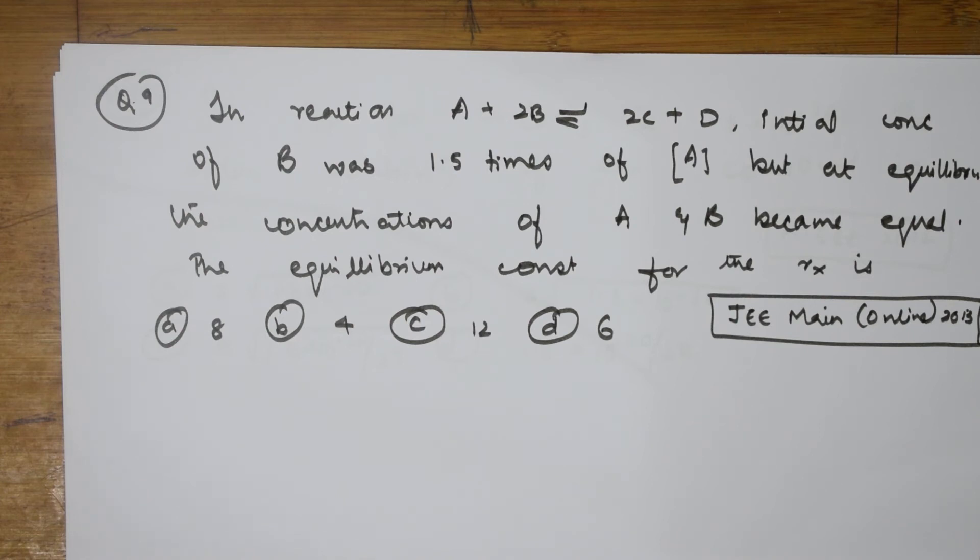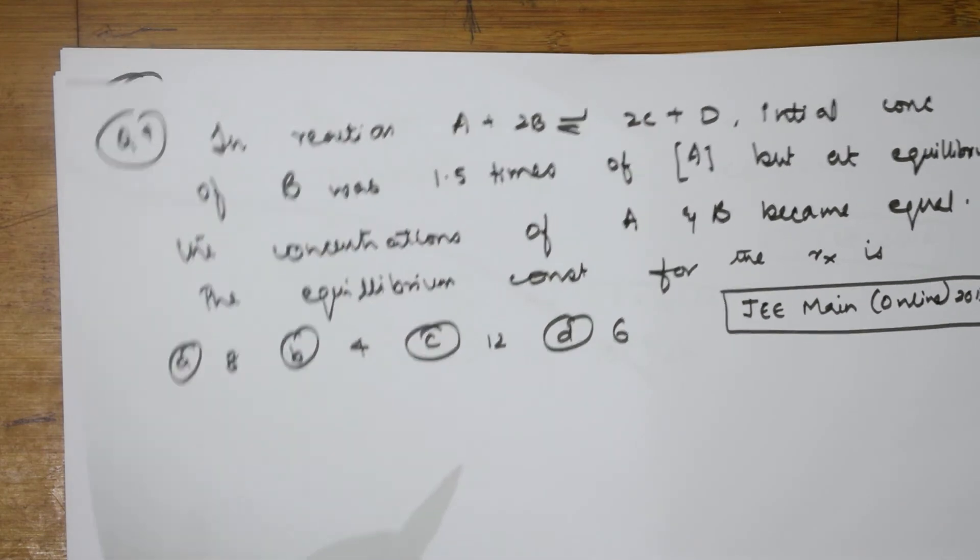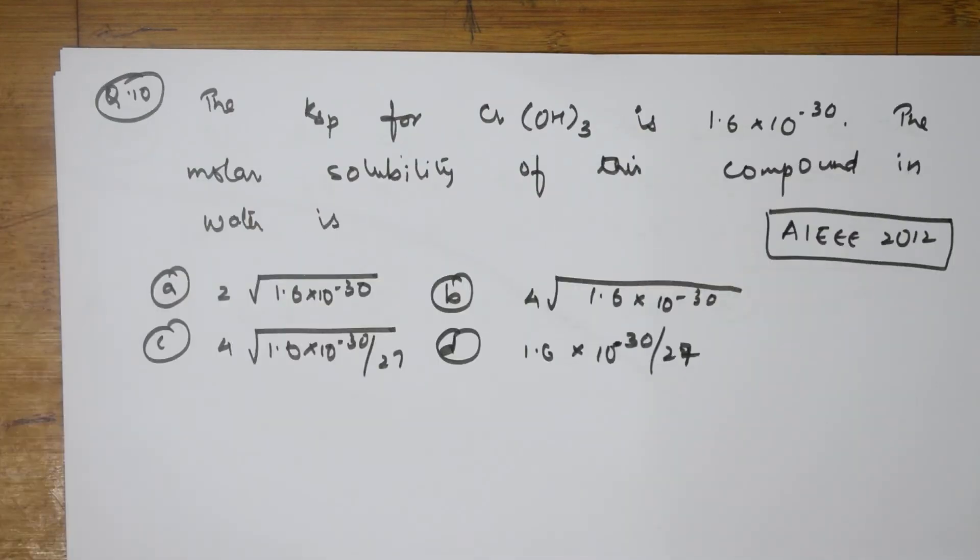In the ninth question, what did they give me? This is again JEE online 2013 question. They have given us the reaction A plus 2B equals 2C plus D. I think I have done this question already. So, let us take this question out and come back to it because the same question is repeated in another lesson also. In the tenth question, what did they give me?